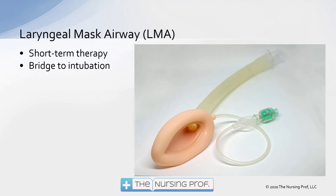Next, we have the laryngeal mask airway, which is usually used by anesthesia for short-term procedures. This airway goes down and the mask piece fits over the larynx — over the beginning of the trachea — sealing it off and preventing aspiration. It provides a good airway for a short period of time; however, it's not super stable, the balloon pressure is significant, and it doesn't completely seal against regurgitation and aspiration.